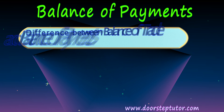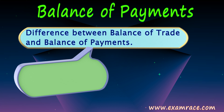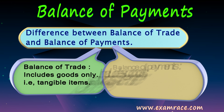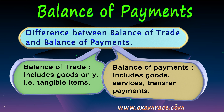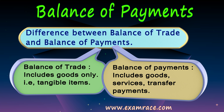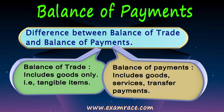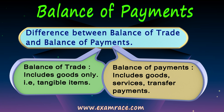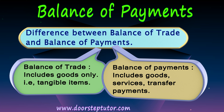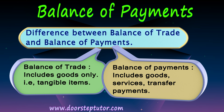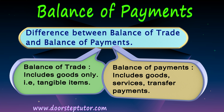Let us look at the difference between balance of trade and balance of payments. The basic difference is what items each includes. Balance of trade only includes trade in goods — trade in visible items. Balance of payments includes goods, services, and transfer payments. So balance of payments takes into account both visible items and intangible items — services, which are invisible goods — as well as transfer payments.